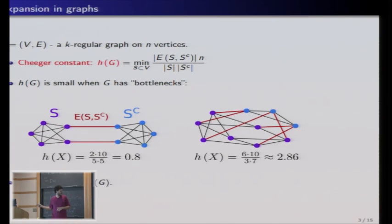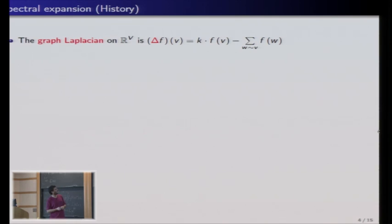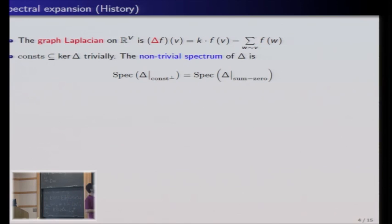And the Cheeger constant is very useful but hard to analyze directly, and here comes the magic of spectral expansion. So we have an operator on the graph on the space of functions on the graph vertices, the Laplacian, which gives for a vertex its value times k minus the sum of the values on neighbors. And the constant functions are in the kernel of this operator, that's trivial, because the value is constant.